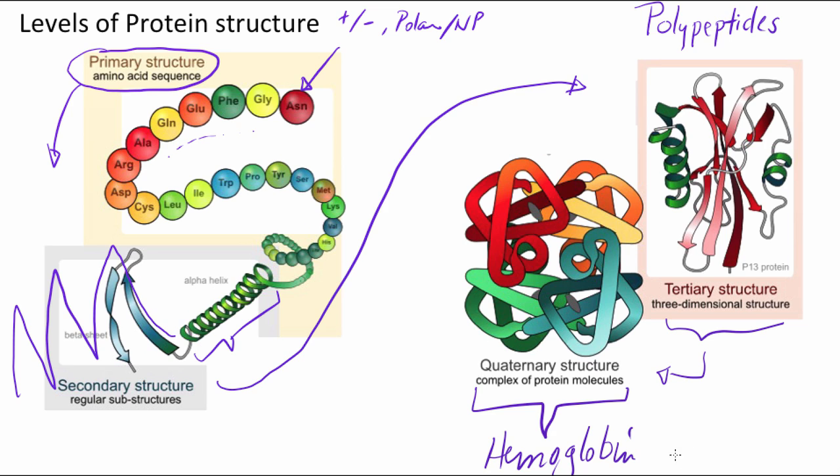This looks an awful lot like hemoglobin to me. It has four polypeptide chains, and if you can make out the color here, there's this sort of gray disc, and there's another one down here. It looks a lot like the heme group in the hemoglobin protein. It's where oxygen would bind. So I suspect that's what this is depicting. That's the quaternary structure, the fully functional protein we call hemoglobin.